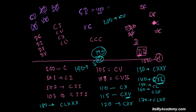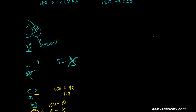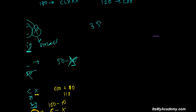For 300 and further numbers, like 350, you write 300 first and then 50. For 380, you write C C C and then represent 80. For 380, you write three C's for 300, then L for 50, then X X X for 30 — giving C C C L X X X.